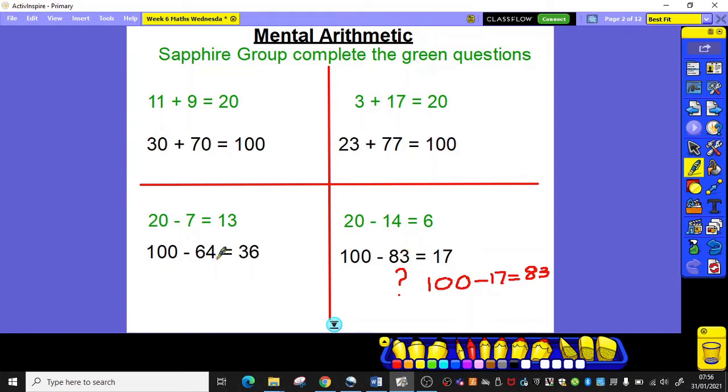Now, 100 take away 64. A common error that I've seen is people putting the answer 46. However, if I was to add 64 and 46, I'm actually going to get 110. So that tells me that I'm 10 too many just here.